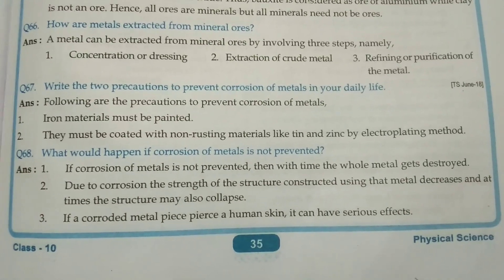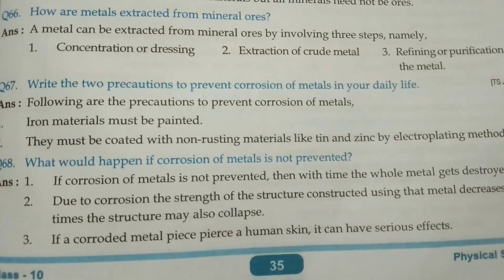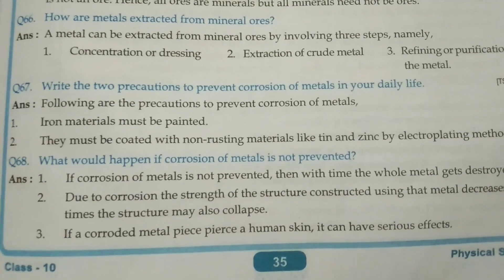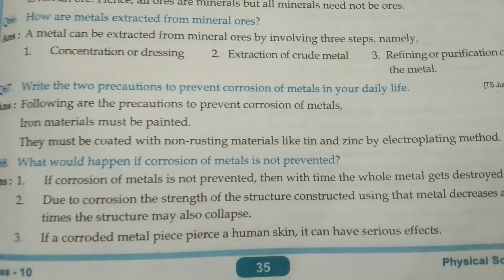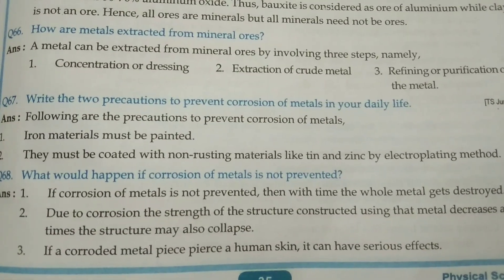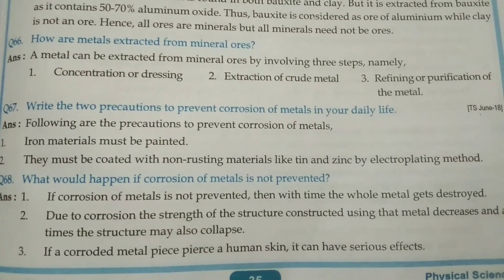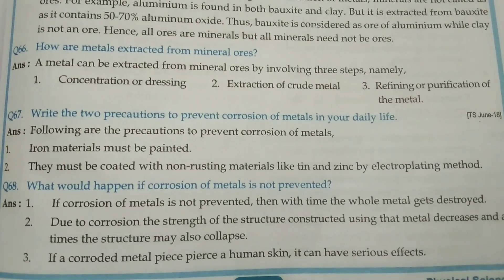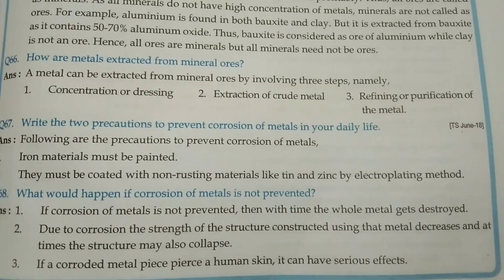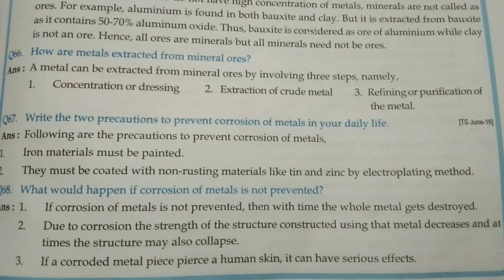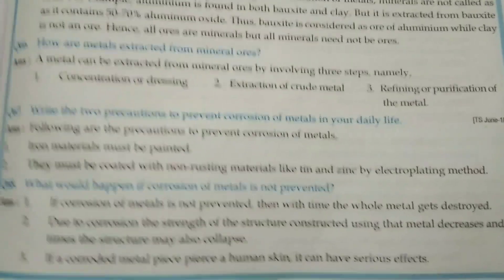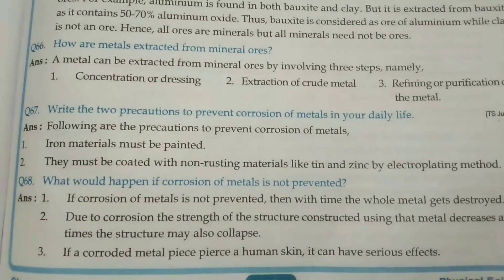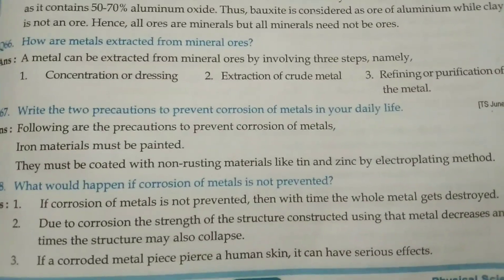One more important question: Write two precautions to prevent corrosion of metals. Iron metals must be painted. They must be coated with non-rusting materials like tin and zinc by electroplating method. If corrosion of metals is not prevented, with time the metal gets destroyed. Due to corrosion, the strength of structures decreases and the structure may collapse. If a corroded metal piece pierces human skin, it can have serious effects.